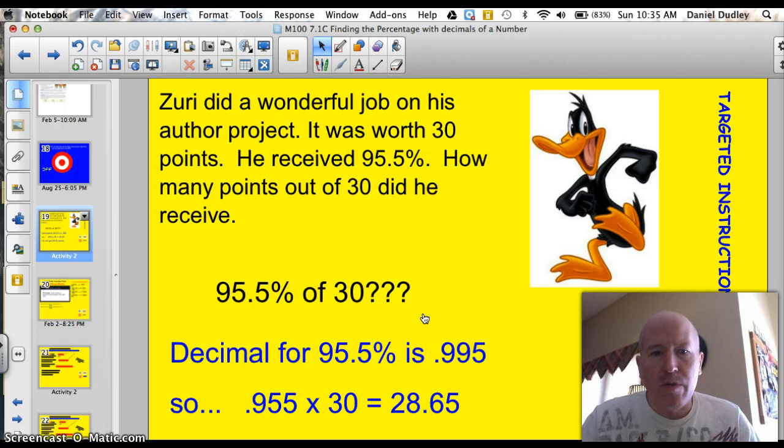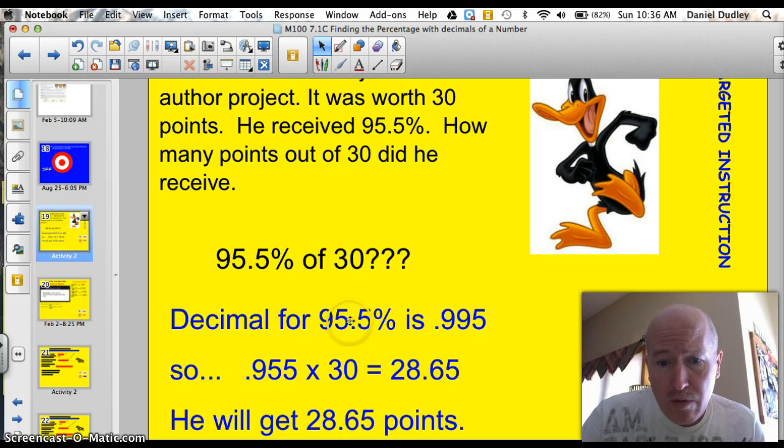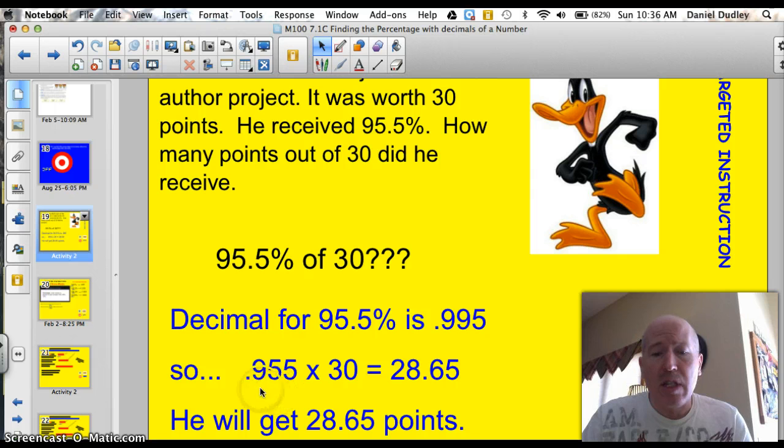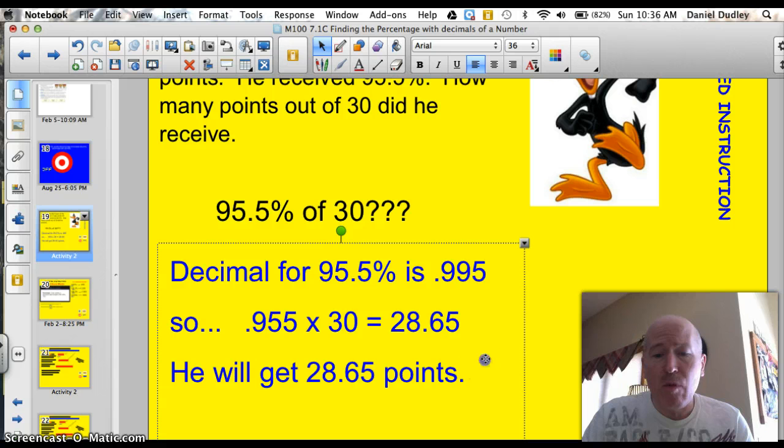Zuri did a wonderful job in his author project. It was worth 30 points. He received 95.5%. How many points out of 30 did he receive? So there's our percent with the decimal. We need to find out what 95.5% of 30 is. The decimal for 95.5% is .955. We need to divide by 100 to get the decimal of a percent. Divide by 100, move it two places to the left, we get .955. Pop that into the calculator, .955 times 30 equals 28.65. We'll be using our calculator a lot in this lesson. Zuri would get 28.65 points on that assignment.